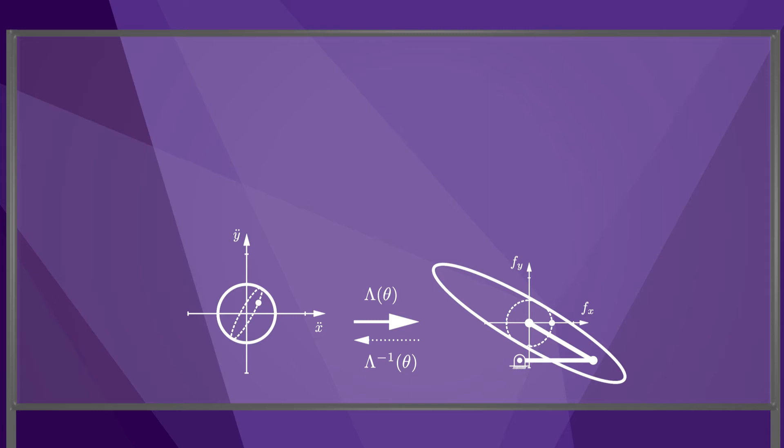From this example, we learn two things. First, the magnitude of the end effector mass depends on the direction of acceleration. Second, in general, the directions of the end effector acceleration and force are not aligned.